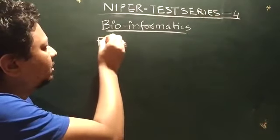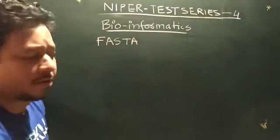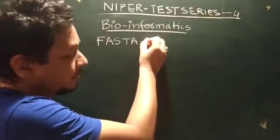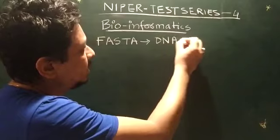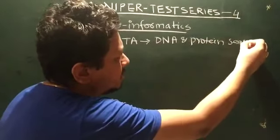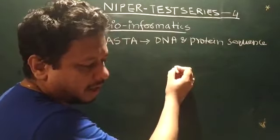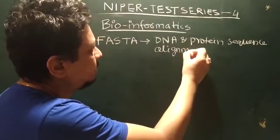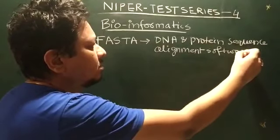So what are the things you have to know? The first thing is the different types of software used in bioinformatics. The first term is a very well-known software for DNA and protein sequencing — DNA and protein sequence alignment software. Alignment software is a very important one.